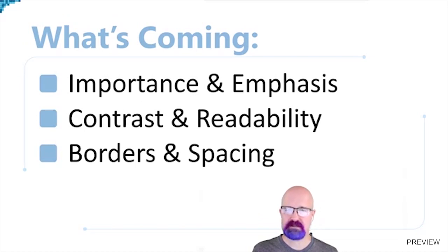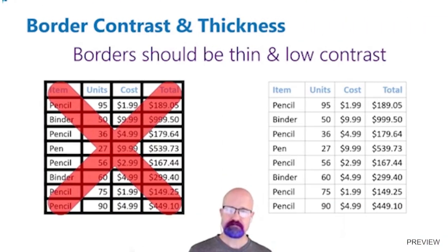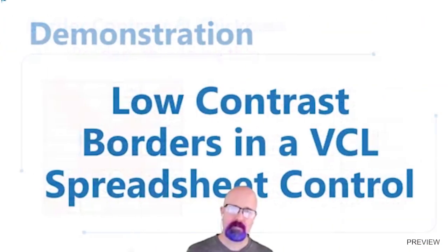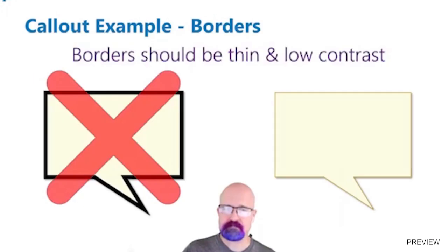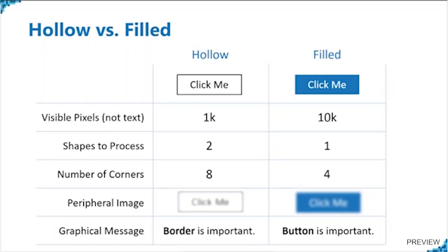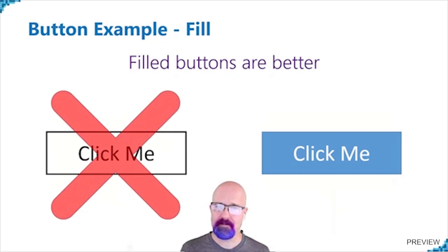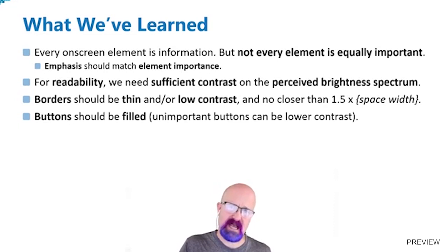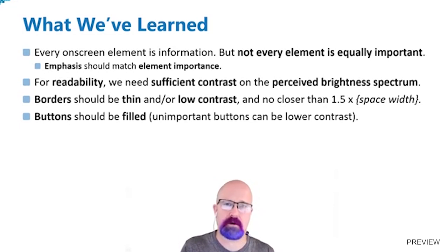Borders and spacing. Borders should be thin and/or low contrast, and no closer than 1.5 times the width of the space if it's the same contrast and the same thickness. We're going to talk about fill and corners. Buttons should be filled. However, unimportant buttons can be a lower contrast — that's okay. So I might have a buy now button in a saturated amber, and I might have a cancel order in a lighter gray.